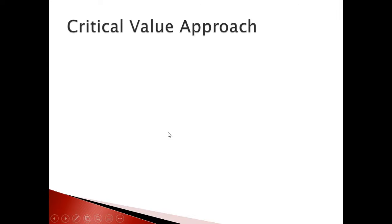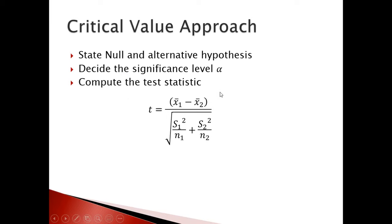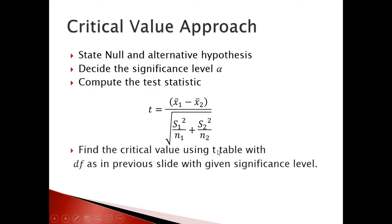Using the critical value approach: first, state the null and alternative hypothesis. Then decide the significance level alpha, compute the test statistic t using the formula, and find the critical value from the t-table with the calculated degree of freedom at the given significance level alpha.